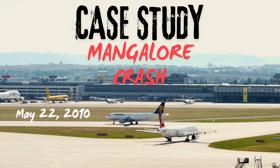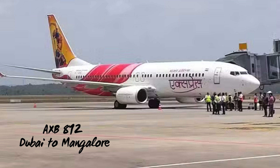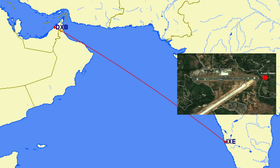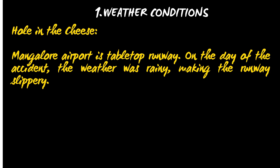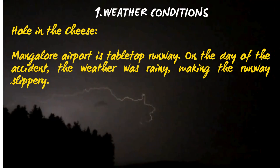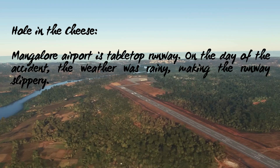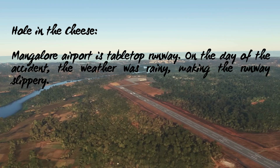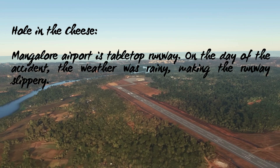The tragic Mangalore air crash on May 22nd, 2010 illustrates the Swiss Cheese Model in real life. Air India Express Flight 812 from Dubai to Mangalore overshot the runway, crashing into a valley and killing 158 of the 166 people on board. Let's break down how the Swiss Cheese Model applies to this accident.